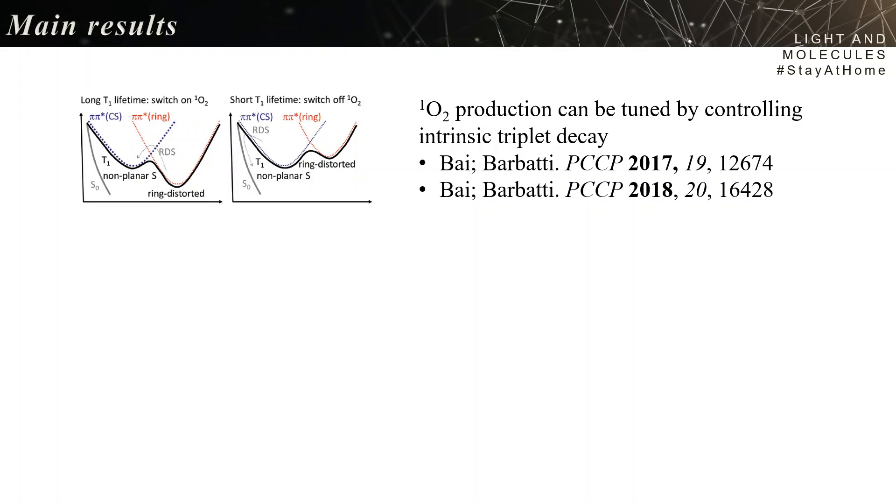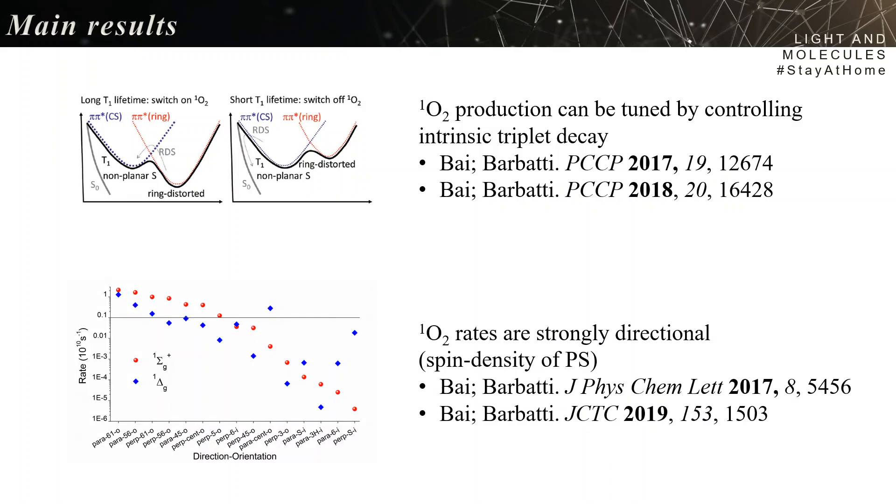And the second important result is that O2 rates are strongly directional, and they are boosted by the direction towards the spin density of the photosensitizer.